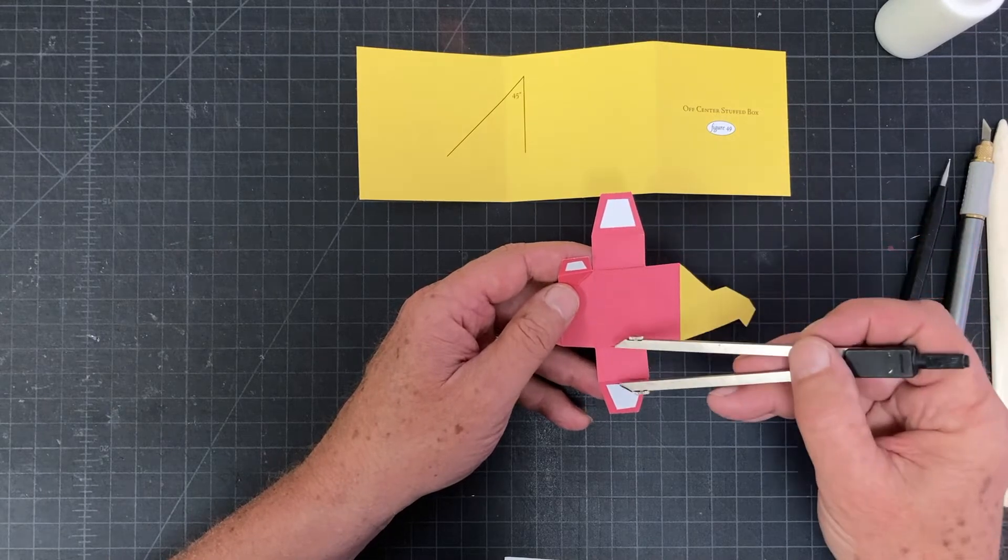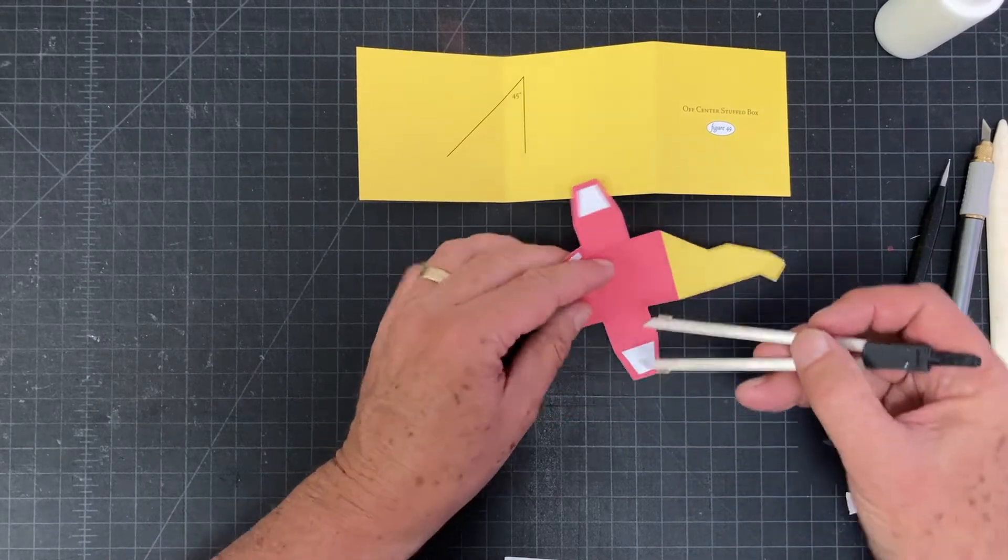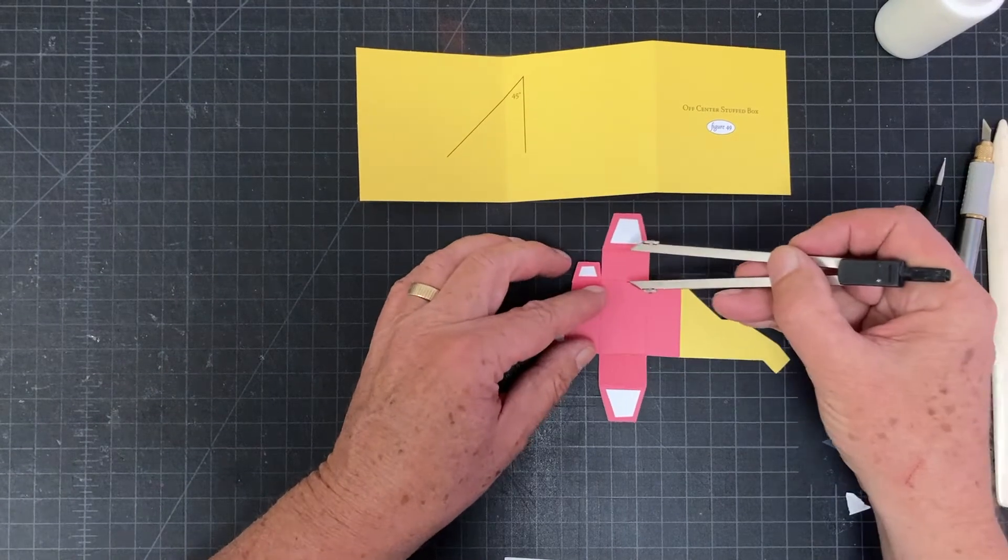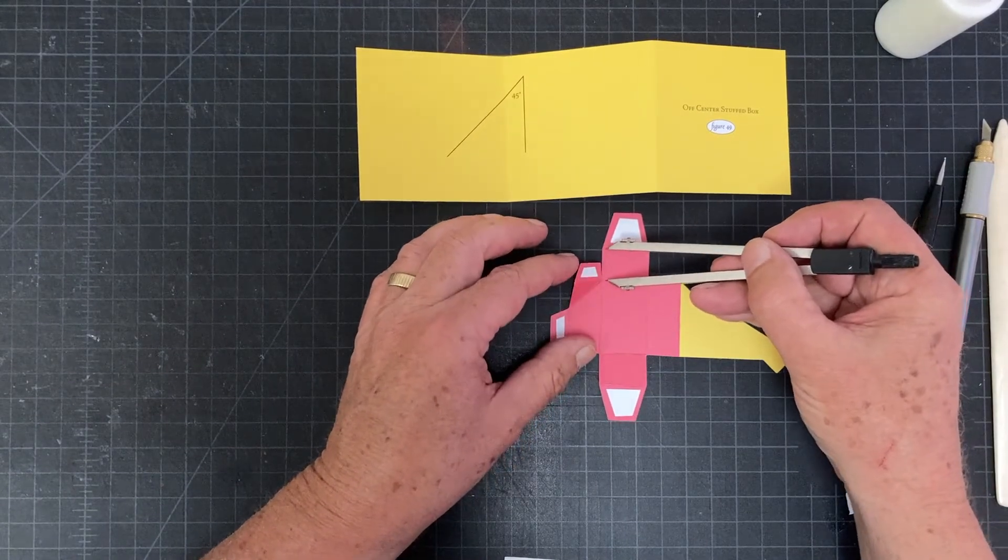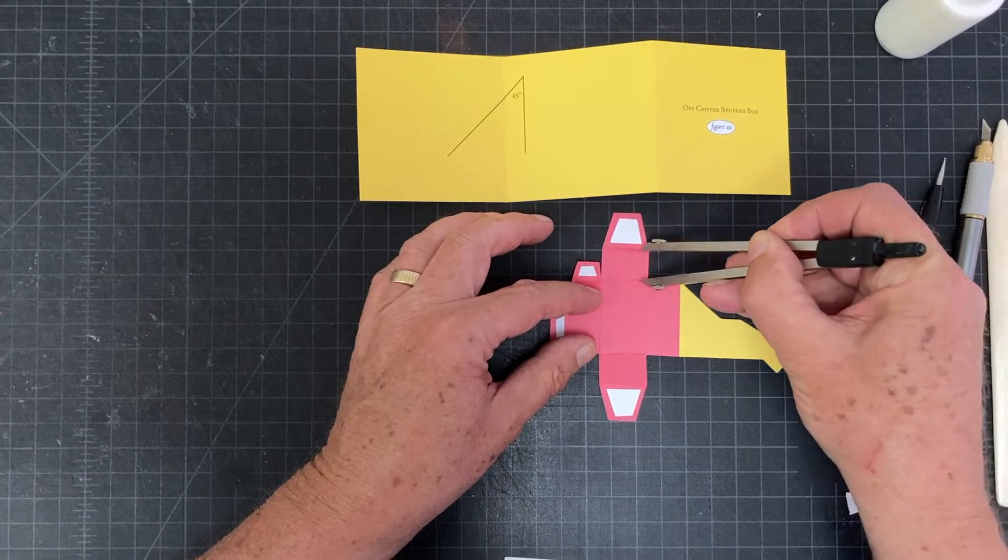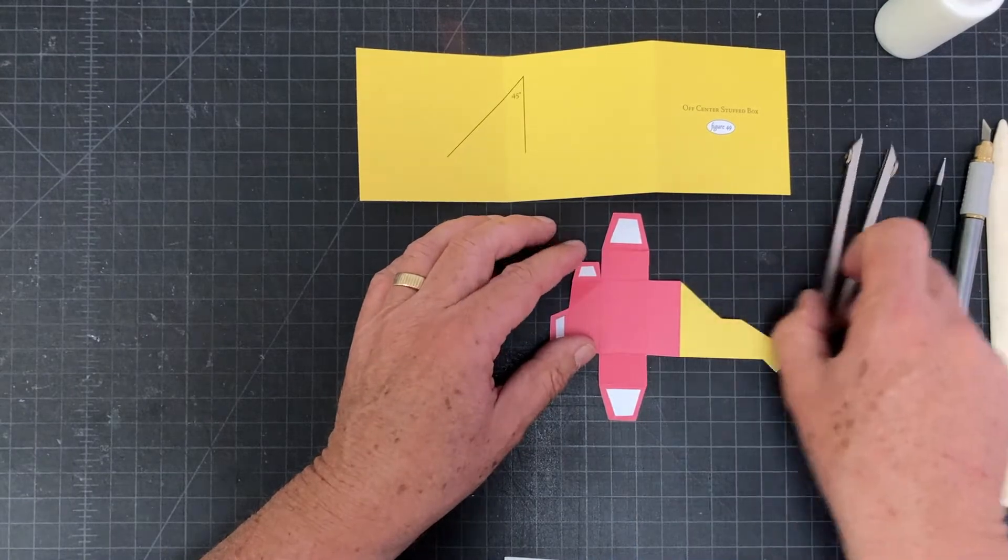This distance is going to be exactly the same as that distance and this one and this one. So I measure that distance right there between those two scores. Use my dividers to hit the point right there, and then use my scoring tool to make that score.